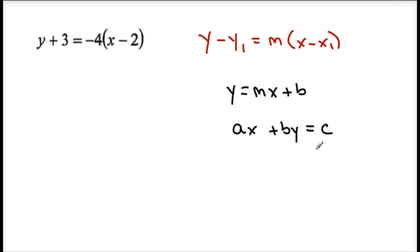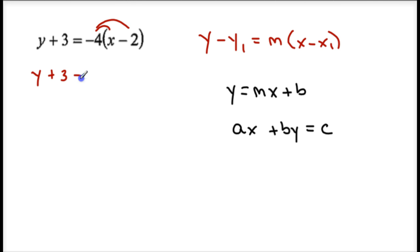I'll show you how to get to those. Example number 1: y plus 3 equals negative 4 times the quantity x minus 2. First, we're going to go from point slope to slope intercept. I'm going to distribute this negative 4 first. So y plus 3 equals negative 4 times x is negative 4x; negative 4 times negative 2 is positive 8.